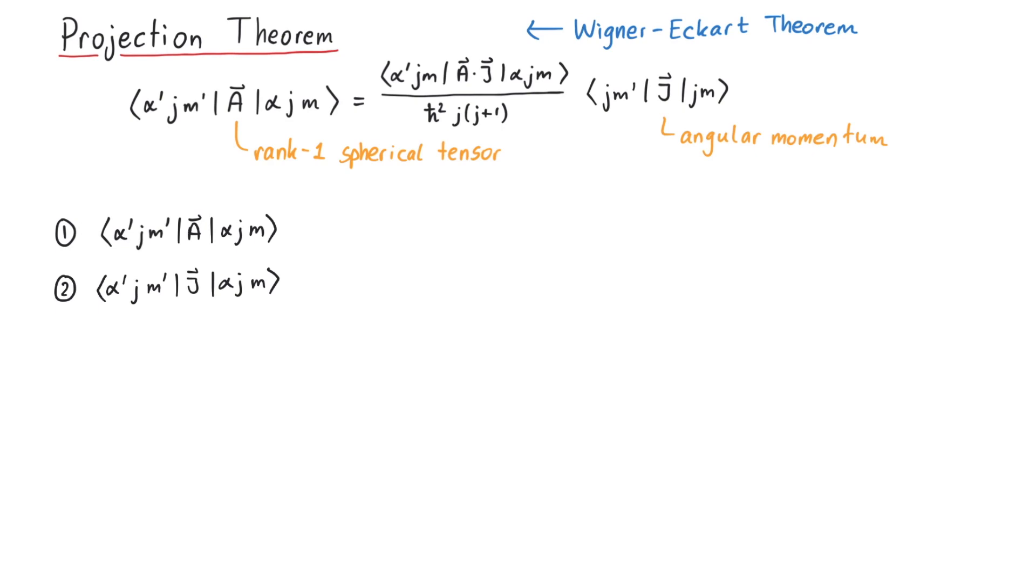Now, since a vector operator is a spherical tensor operator of rank 1 with components q, we can apply the Wigner-Eckart theorem here. We get a Clebsch-Gordan coefficient as well as a reduced matrix element, which is basically just a proportionality factor. For more information on the reduced matrix element, you can watch our video on the Wigner-Eckart theorem.